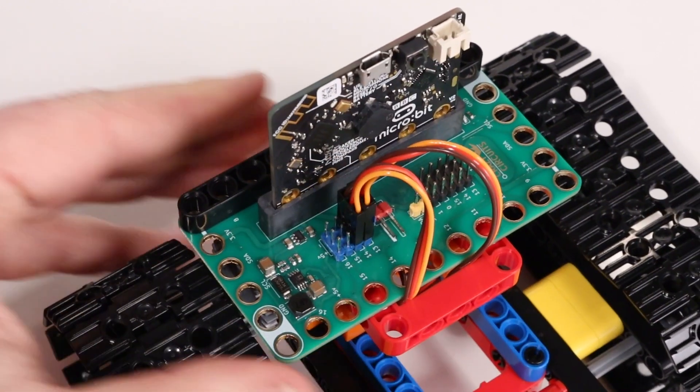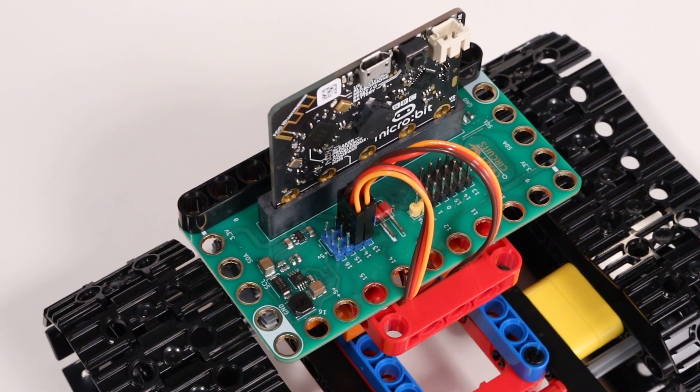Then the right servo will plug into pin 14. Again, we'll see orange closest to where it says 14, then the red wire, then the brown wire.